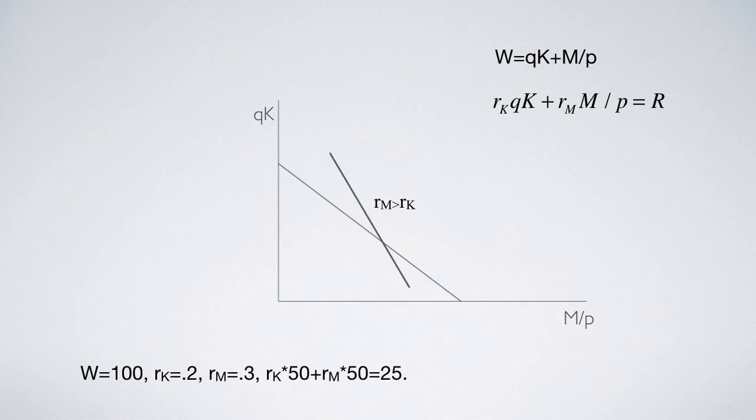Then Tobin should invest more on monetary assets. And the highest return happens at M over P equal to 100 and QK equal to 0 with the result of 30.